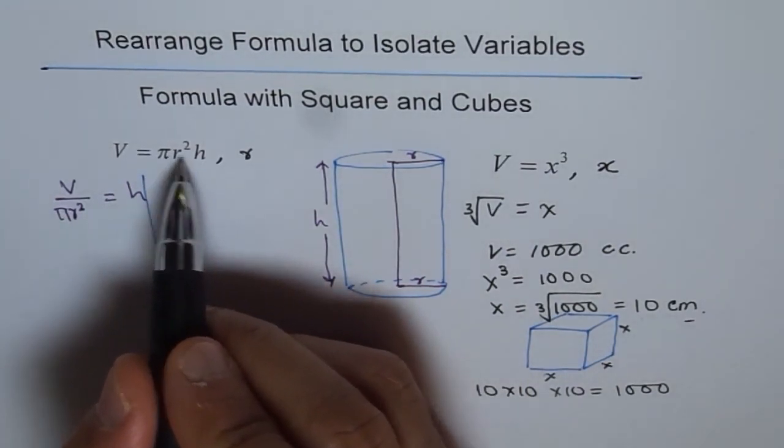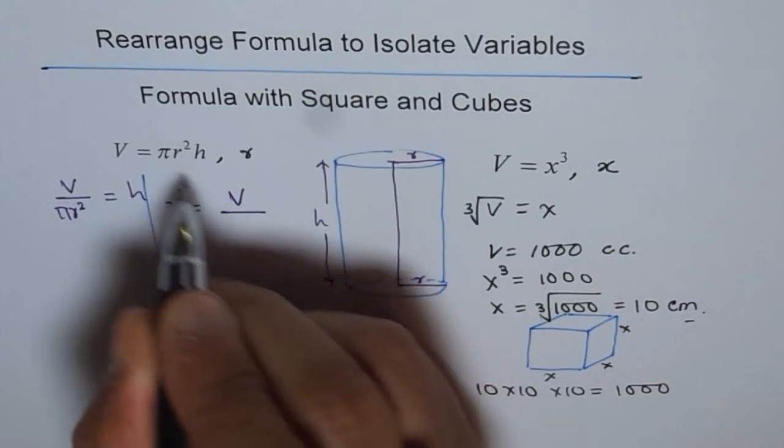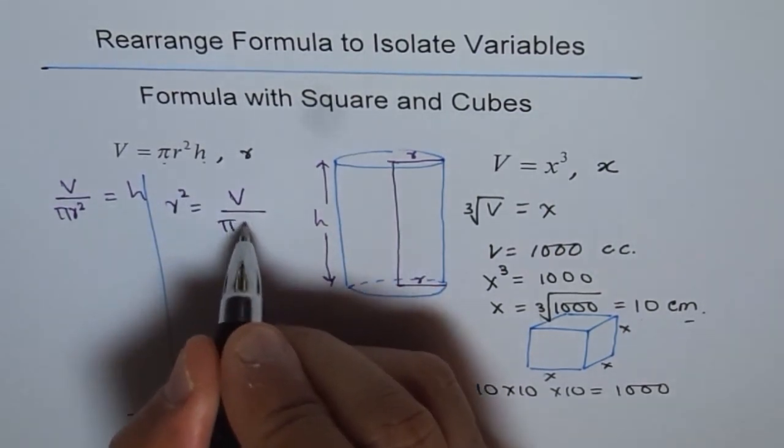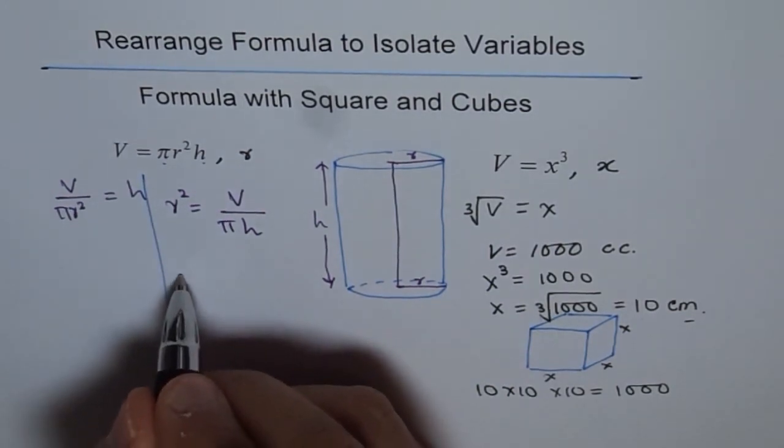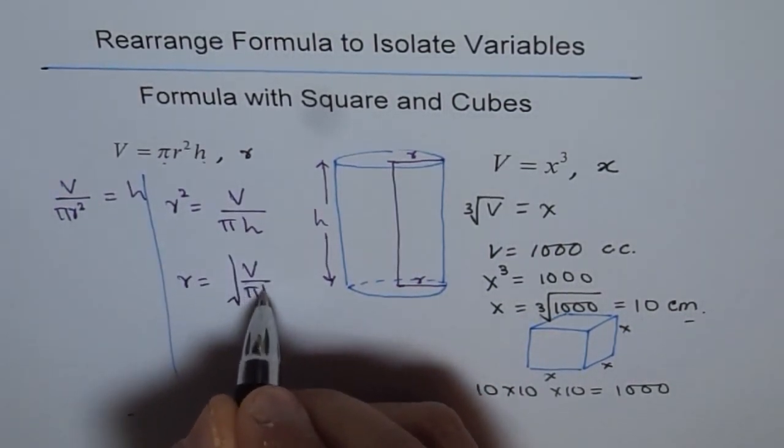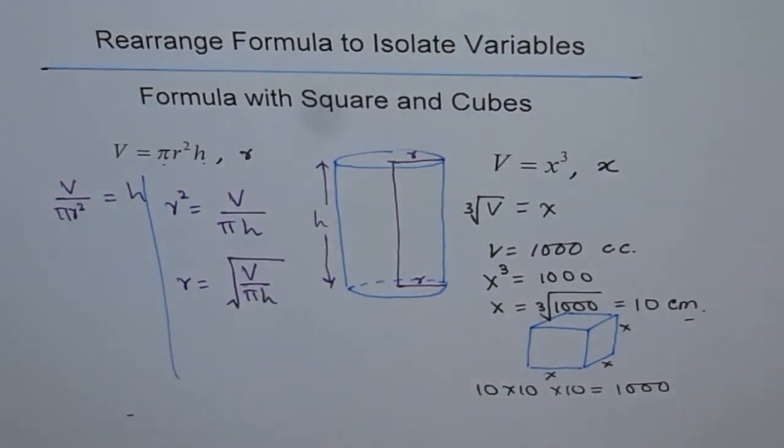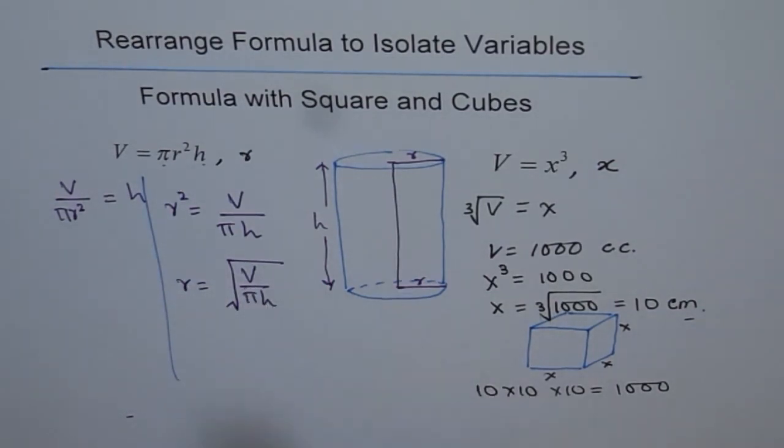So let's, then we have to divide by pi and h. So we say radius square is equals to volume divided by pi and h. But this is radius square. To get radius, we will say r equals to square root of volume divided by pi and h. So that is how you get radius for as with relation to volume and height of a cylinder.